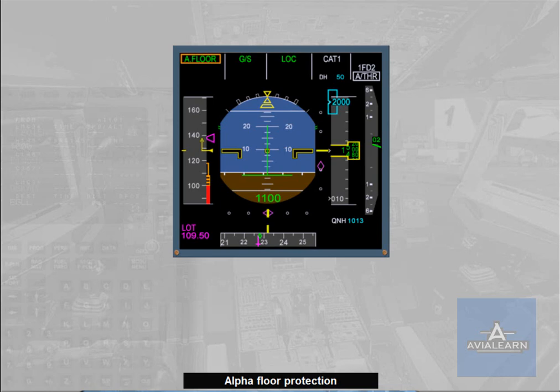When alpha floor is triggered, autothrust is turned on if it was previously off, indicated by a white autothrust on the FMA. Alpha floor in green is displayed as the autothrust mode. The alpha floor function is available from lift-off down to 100 feet radio altimeter.